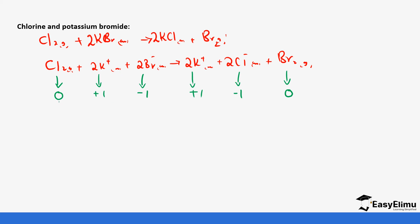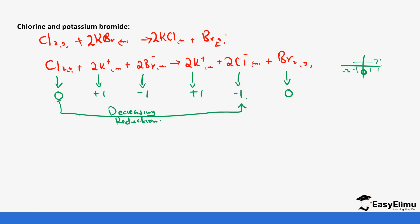Looking at the oxidation number changes: chlorine goes from zero to negative one, which is a decrease. On the number line zero is larger than negative one, so a decrease means it is undergoing reduction — chlorine is gaining electrons. Potassium is the same on both sides, so we ignore it. Bromine changes from negative one to zero, which is an increase in oxidation number, so it is undergoing oxidation.